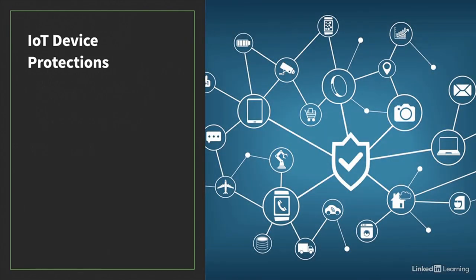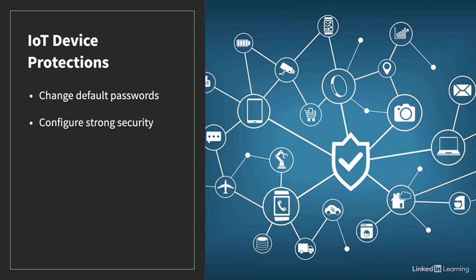Some IoT devices are easier to secure. If that's the case, at a minimum implement the following: change default passwords when possible — this is easily the most important way you can protect your organization from attacks against your IoT devices. Attackers know the most common IoT default passwords and will use them to compromise your devices. Next, configure strong security if possible — practice the least privilege principle and only give the device and accounts the ability to do what they should be doing and no more. And third, install software updates and patches. If the manufacturer is supporting their IoT devices with periodic software updates and patches, make sure you install them in a timely manner, as they may include important security fixes.